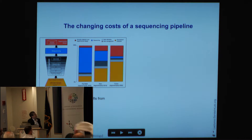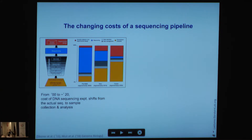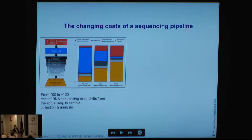With next-generation sequencing, the sequencing cost portion has shrunk, and now much more of the cost goes into downstream analysis or sample acquisition. As the exponential scaling of sequencing technology continues, we expect the cost of sequencing itself to go nearly to zero. When that happens, proportionally most of the cost will be taken up by downstream analysis or sample acquisition — very much like photography today, where it costs nothing to take a picture on your iPhone.